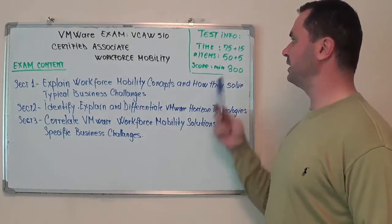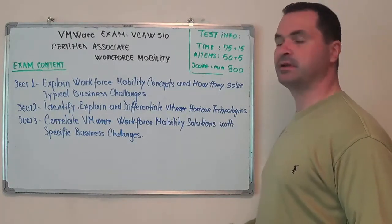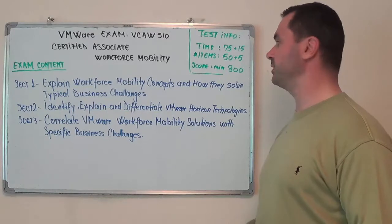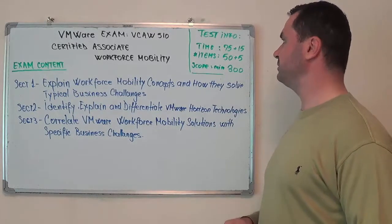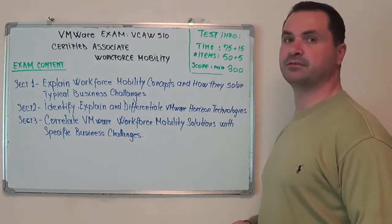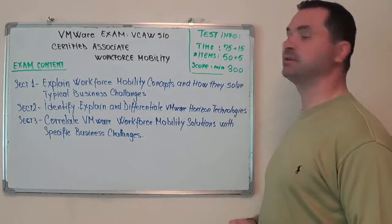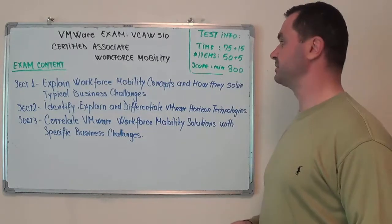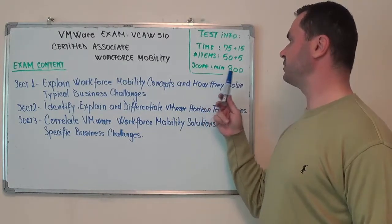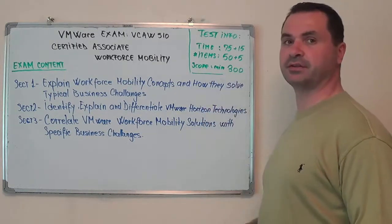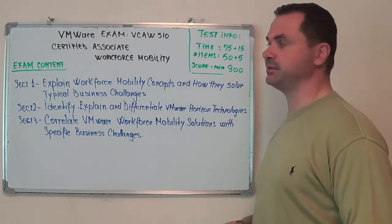Here are the basic test information: the time allowed is 75 minutes for 50 questions, plus 15 minutes for another 5 extra questions. The minimum required passing score is 300 on a scale from 100 to 500.